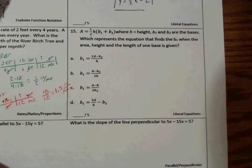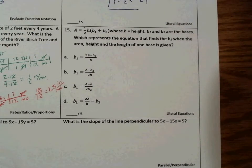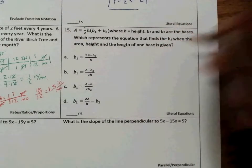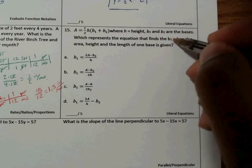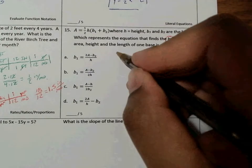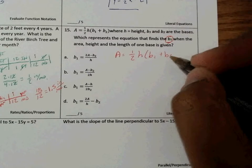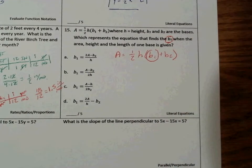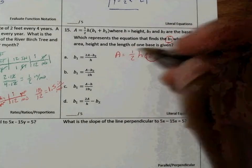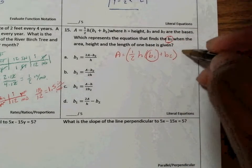We look at problem number 15. This is just like a literal equation, so go ahead and take some time to read it. In this problem we can see that we are trying to solve for b1. So we have A is equal to 1/2 the height times b1 plus b2. First thing I would get rid of is the 1/2, so to get rid of that I'm going to multiply both sides by 2.